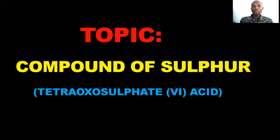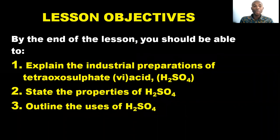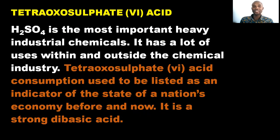In the compounds of sulfur, of course we have several compounds. We want to focus on tetraoxosulphate-VI acid. Our topic for this particular video is anchored on tetraoxosulphate-VI acid as a compound of sulfur. By the end of the video you should be able to explain the industrial preparations of tetraoxosulphate-VI acid.